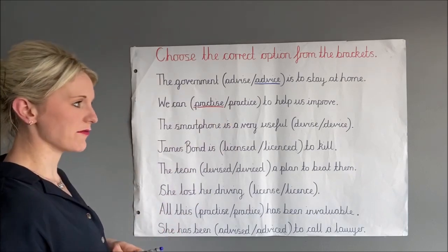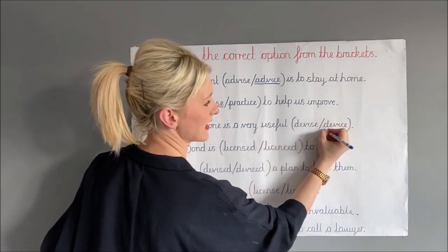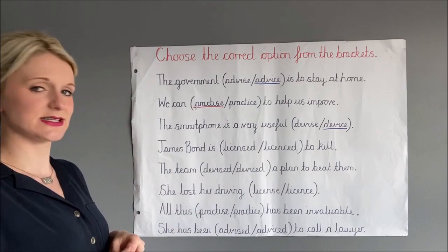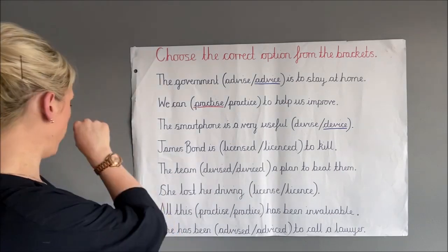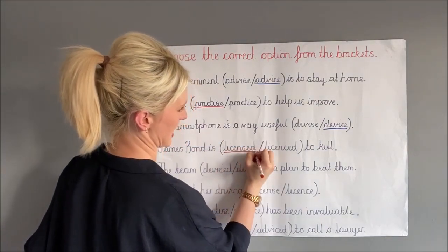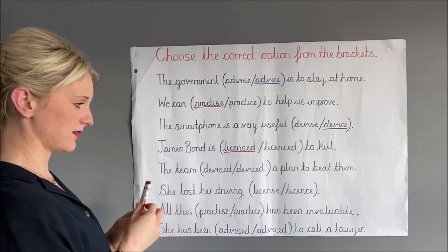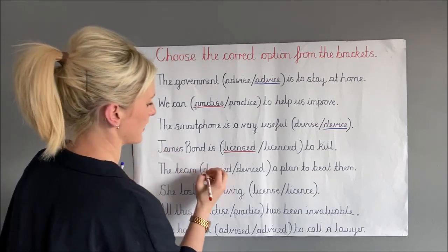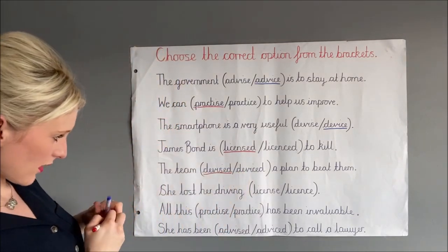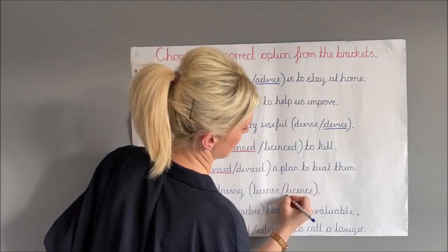Next: 'the smartphone is a very useful device.' It is a thing — an invention — so it would be the CE ending. 'James Bond is licensed to kill' — that is the verb form, so it would be an SED ending. 'The team devised a plan to beat them' — it's something the team have done, so it is a verb and would be SE. Then 'she lost her driving licence' — your driving licence is a thing, so that would be a CE ending.